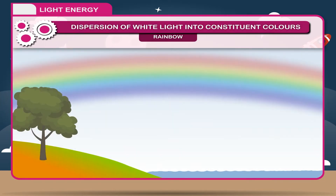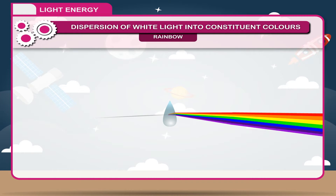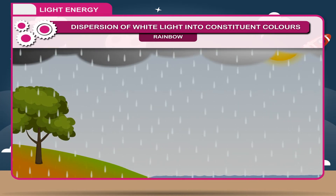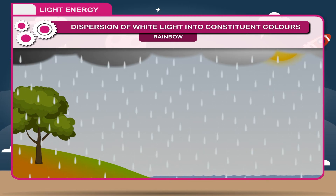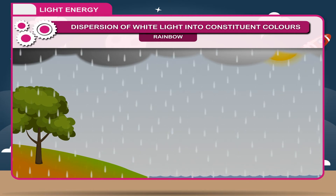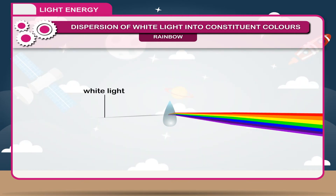Rainbow: The rainbow is a wonderful example of dispersion of light. A rainbow is formed when raindrops of water in the atmosphere disperse the sunlight. This phenomenon occurs just after rainfall when there are a large number of tiny water drops in the atmosphere which act like tiny prisms. The beam of white light from the sun passes through these water drops and undergoes dispersion, splitting into its constituent colours, producing the rainbow.